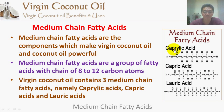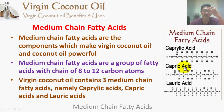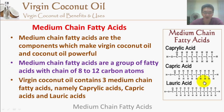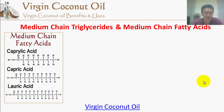If you look at the diagram on the right, the first one is caprylic acid — if you count the C, which is the carbon atom, it is actually a C8 chain. Capric acid is C10, a 10-carbon chain, and lauric acid is C12 — 12 carbons. So these are the three medium chain fatty acids contained in coconut oil or virgin coconut oil.